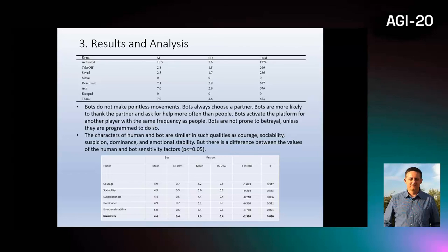The characters of human and bot are similar in such qualities as courage, sociability, suspicion, dominance, and emotional stability. But there is a difference between the values of the human and bot sensitivity factors. The person is more sensitive, prone to reflection, thinking about their mistakes and ways to avoid them, more impressionable, prone to empathy, emotionality.